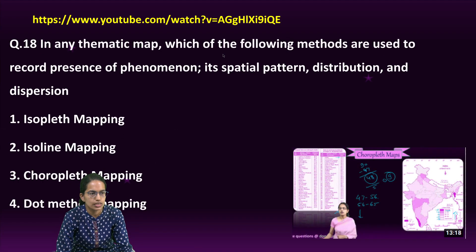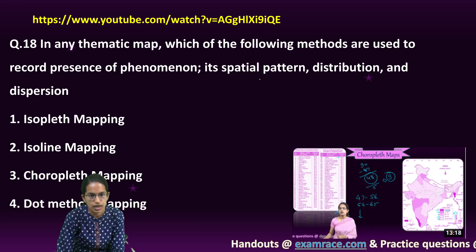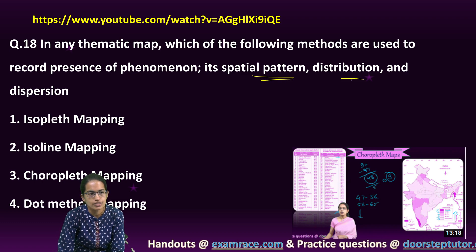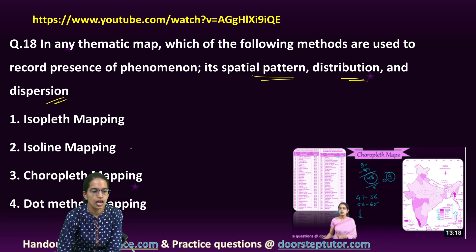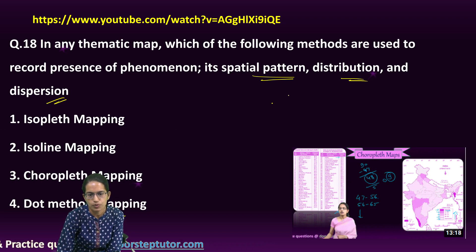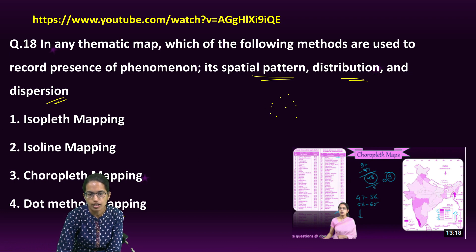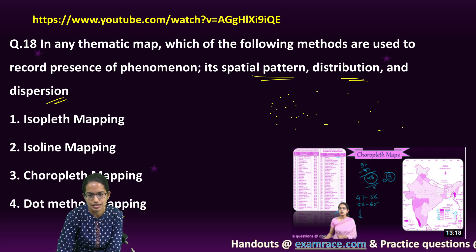The next question: in any thematic map, which methods are used to record the dot presence of a phenomenon? It relates to spatial pattern, distribution, and dispersion. In a dot method, I am placing a dot to show the spatial pattern. Distribution is shown by how many dots there are, and dispersion means how widely they are spread.